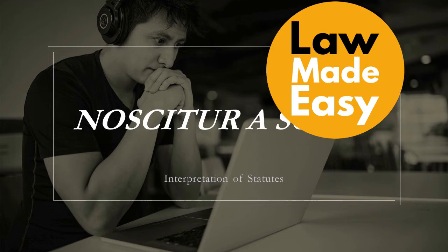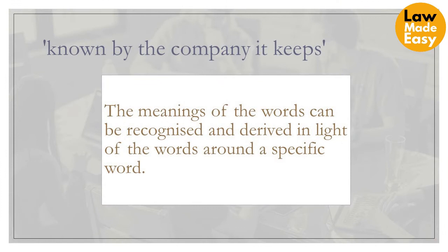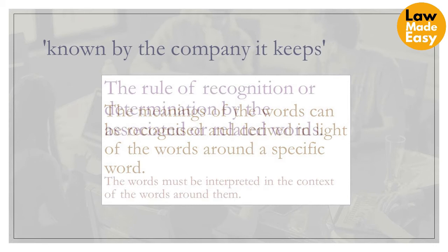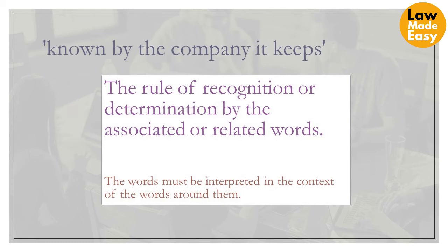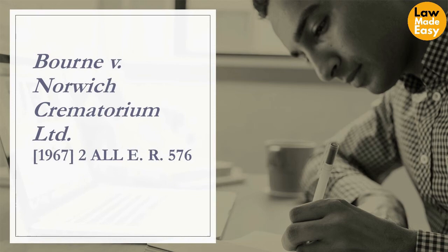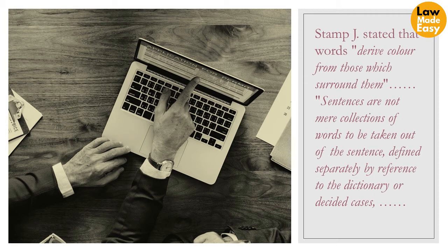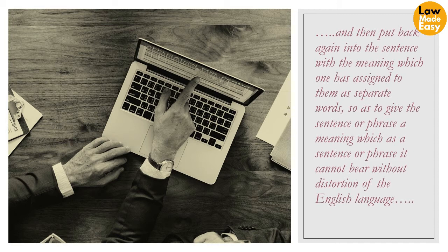In this lecture we are going to learn about noscitur associiis — literally meaning 'known by the company it keeps.' This means the meanings of words can be recognised and derived in light of the words around a specific word. In English, this can be described as the rule of recognition or determination by associated or related words. Words must be interpreted in the context of the words around them. In Born v Norwich Crematorium Ltd, Stamp J stated that 'words derive colour from those which surround them' — sentences are not mere collections of words to be taken out of the sentence, defined separately by reference to the dictionary, and then put back again with separately assigned meanings so as to give the sentence a meaning it cannot bear without distortion of the English language.